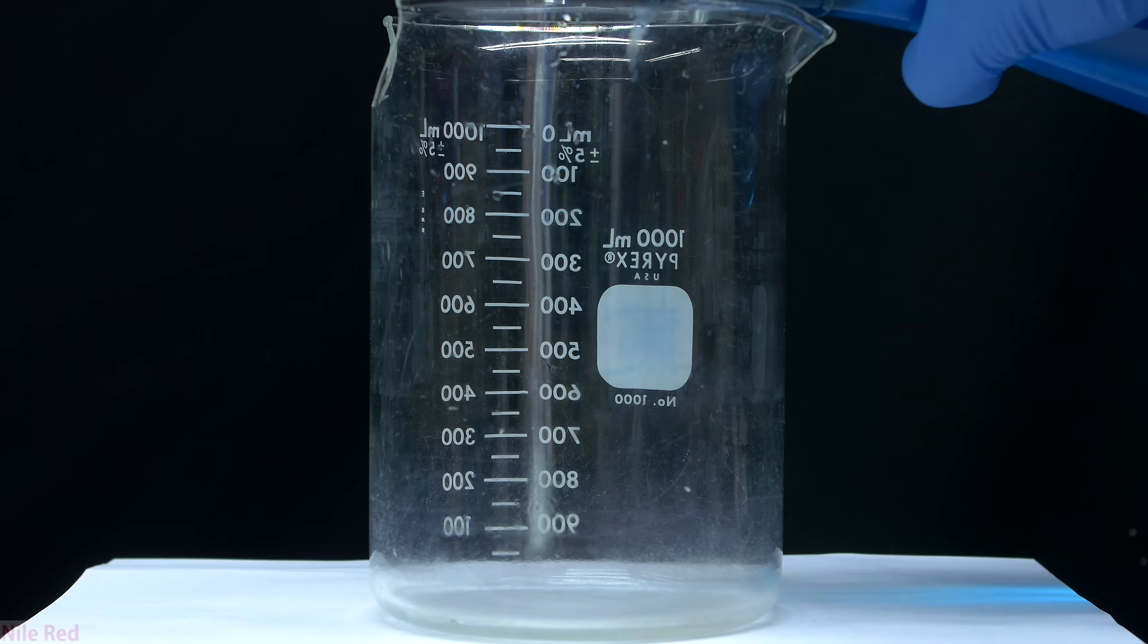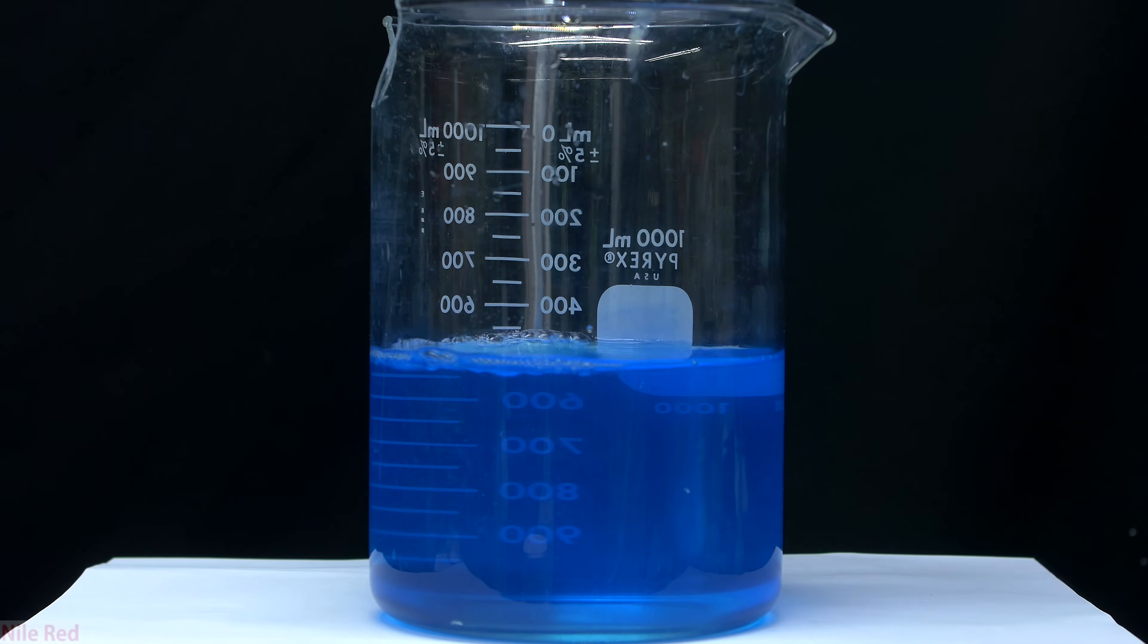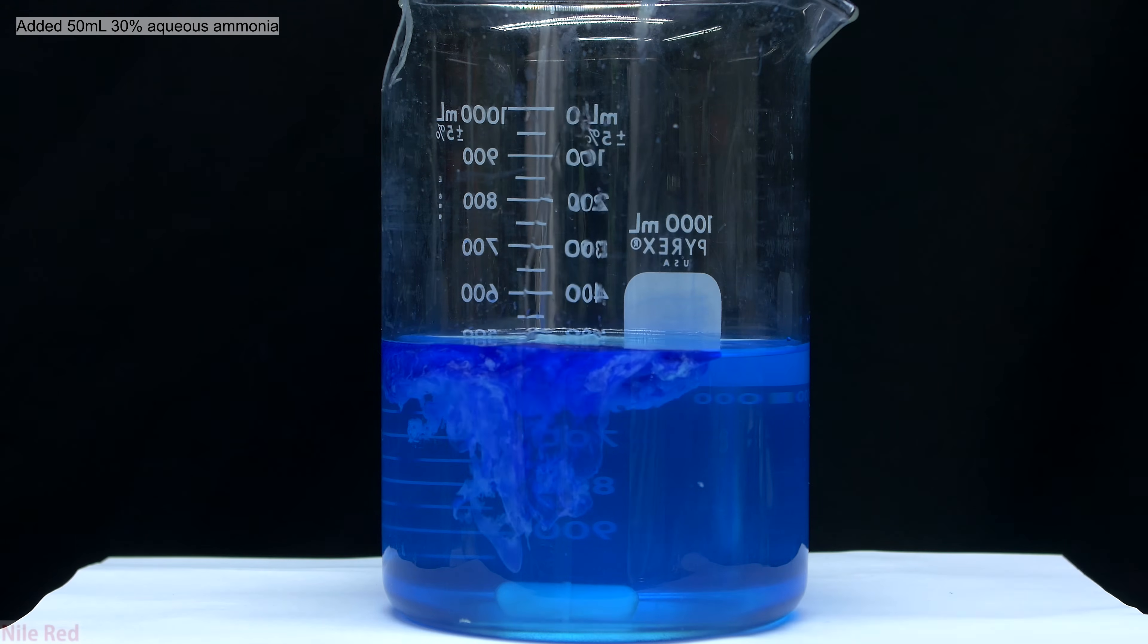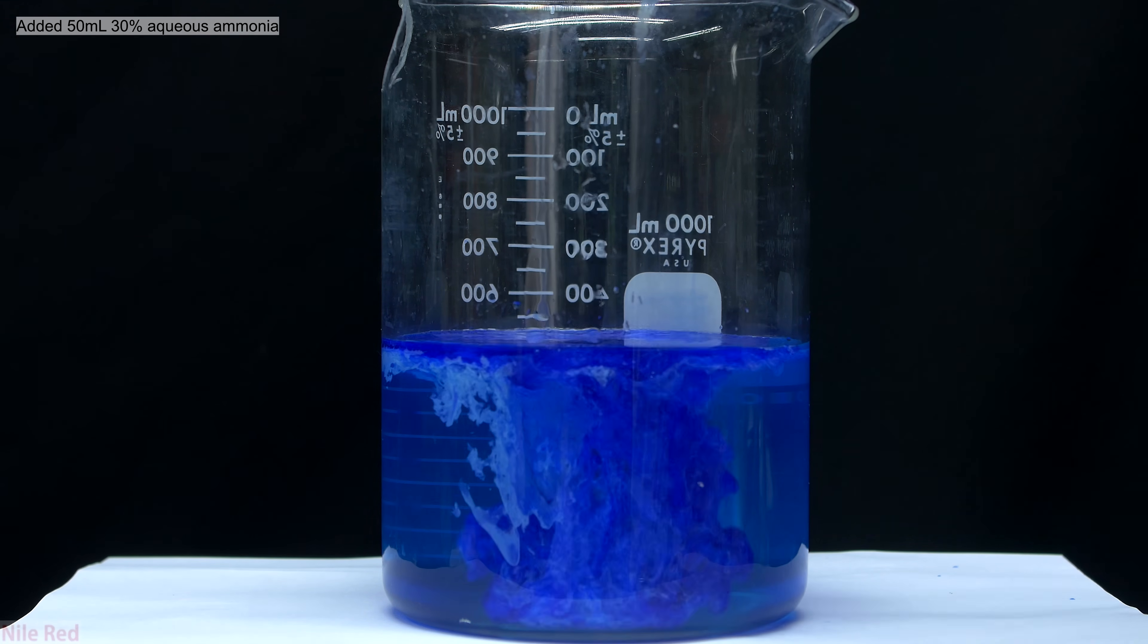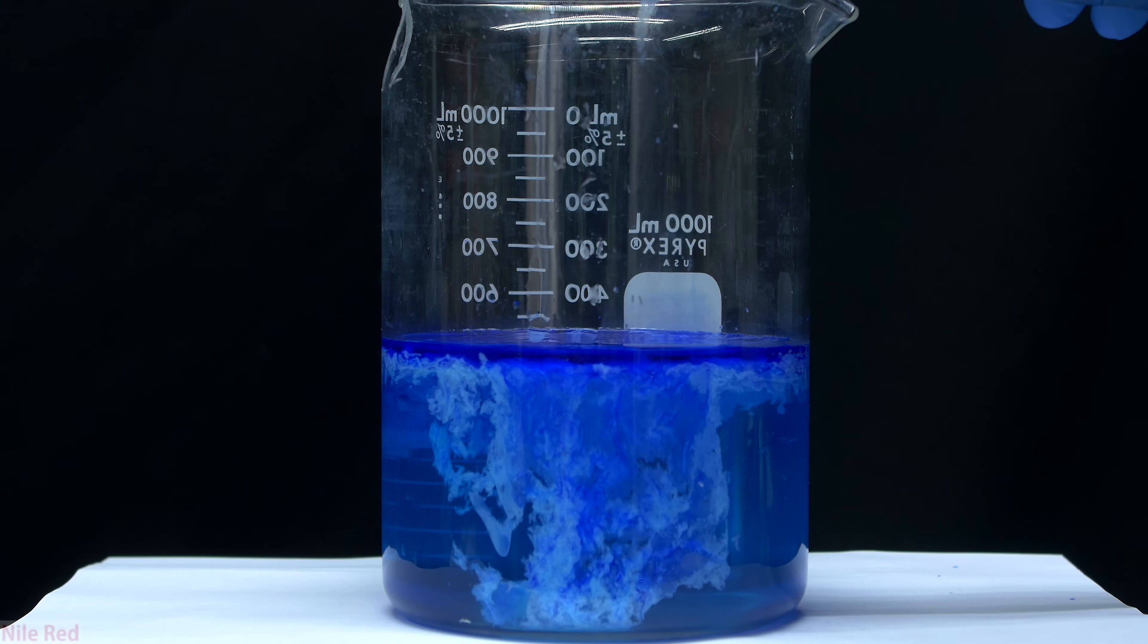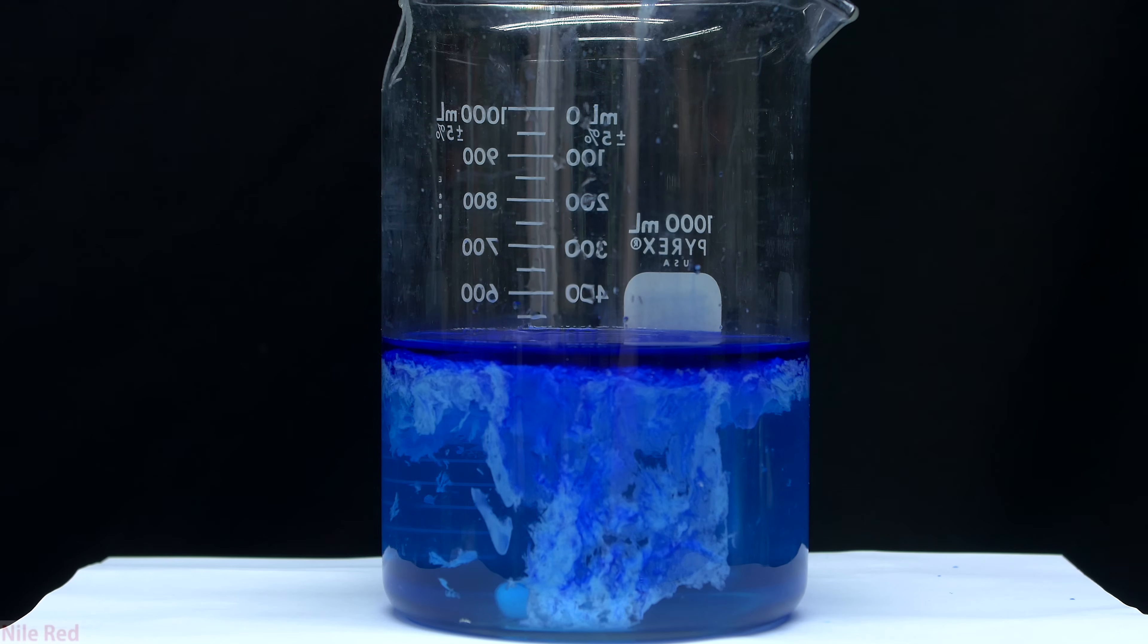So now that our solution is free of insoluble impurities, I transfer the copper sulfate solution to a 1 liter beaker. To the copper sulfate solution is then poured in about 50 milliliters of 30% aqueous ammonia. As we add the ammonia it will initially make this light blue precipitate which is our copper hydroxide, but as we add more it will gradually take on a darker and darker color.